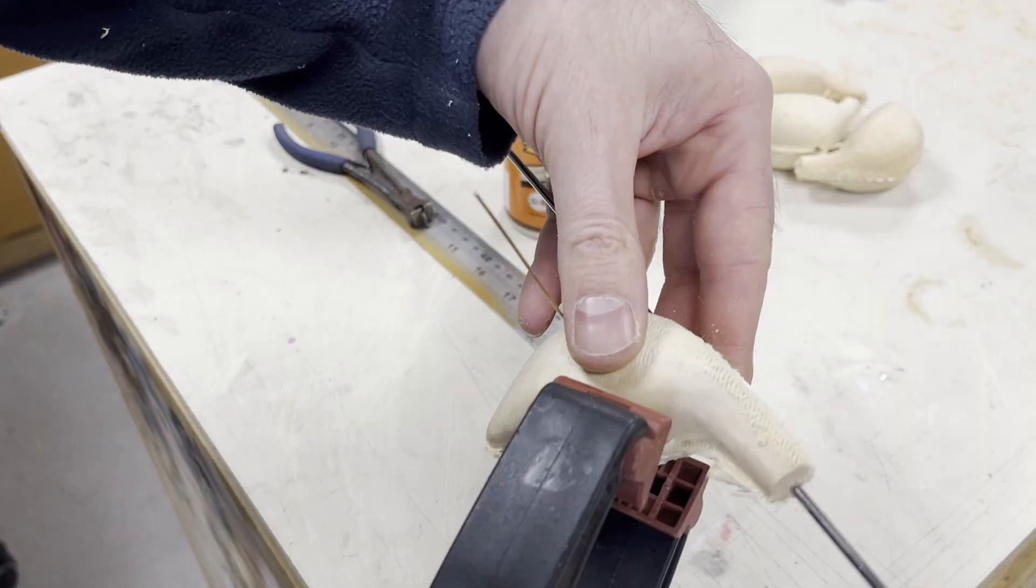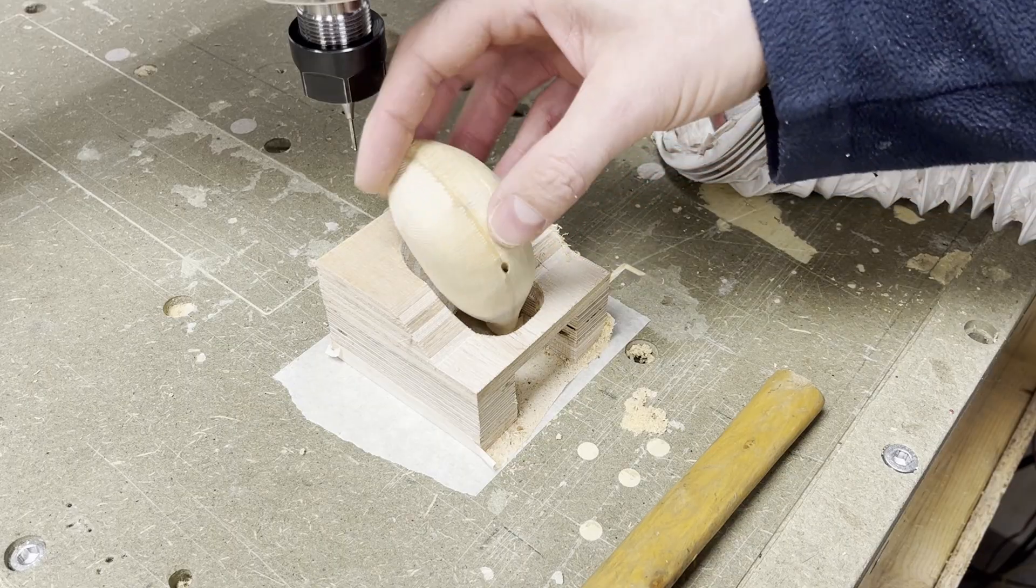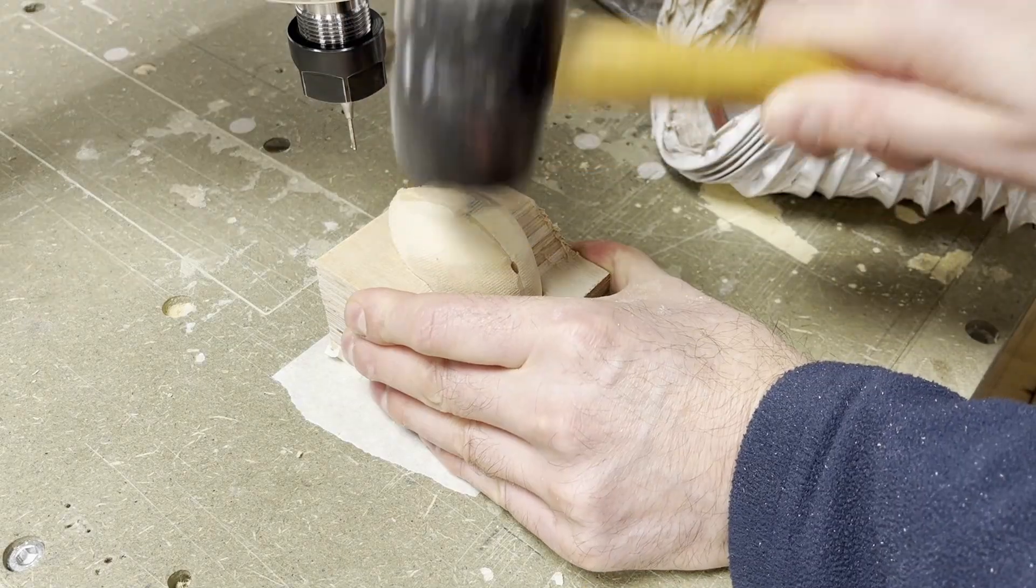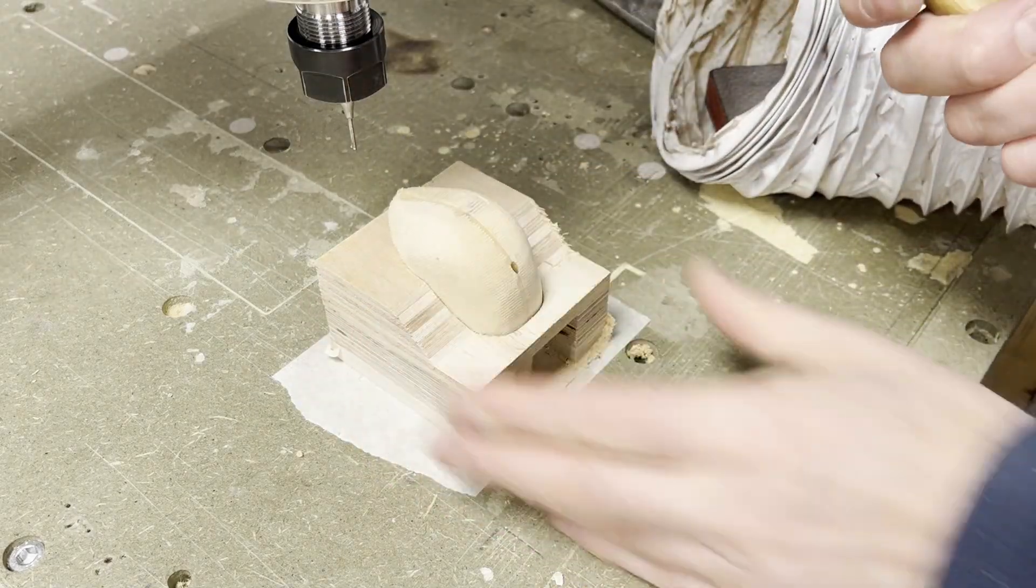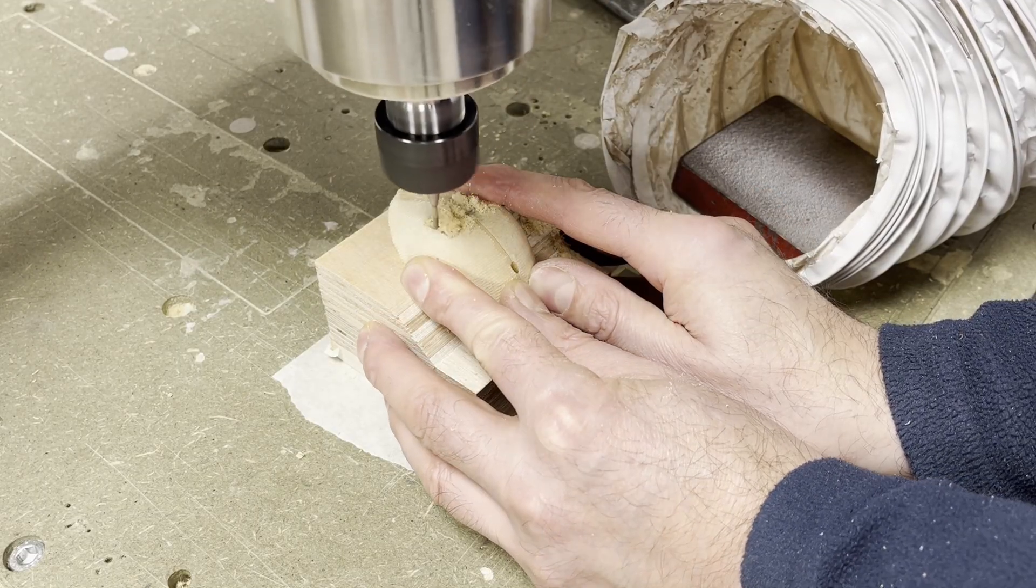The section where the legs fit into the flamingo is cut using a separate process. I built a jig that holds the body in a precise position, using an impression of the flamingo, allowing the CNC to accurately hollow out the slots for the leg housings.